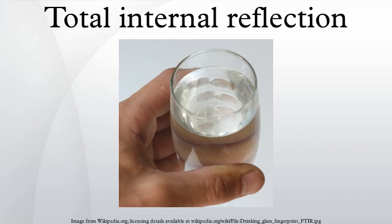At the glass-air boundary of the flat surface, what happens will depend on the angle. Where the incident angle is less than the critical angle, the ray will split — some of the ray will reflect off the boundary and some will refract as it passes through. This is not total internal reflection. If the incident angle is greater than the critical angle, the entire ray reflects from the boundary and none passes through.